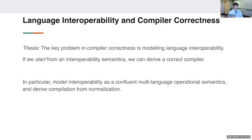My idea is that if we start from a good interoperability semantics, we can pretty easily derive a correct compiler. In this talk I'm going to show one way to do that. We're going to model interoperability as a multi-language operational semantics — a giant rewrite system — and if that is confluent, we can derive a correct compiler from normalization of that rewrite system. That's my whole talk in one slide.